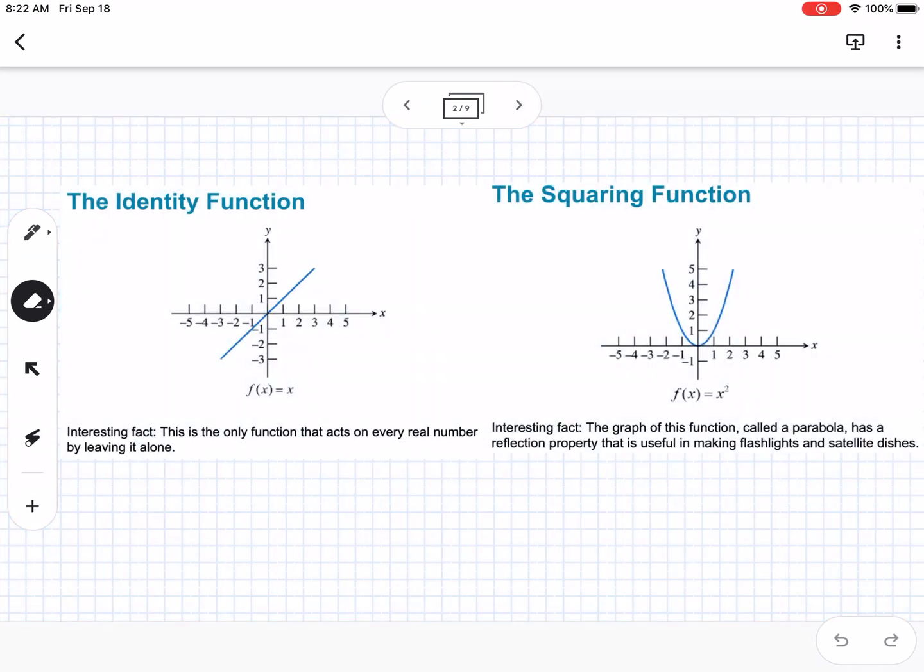The first one we have is the identity function, also known as linear, with equation f(x) = x. The interesting fact is this is the only function that acts on every real number by leaving it alone.